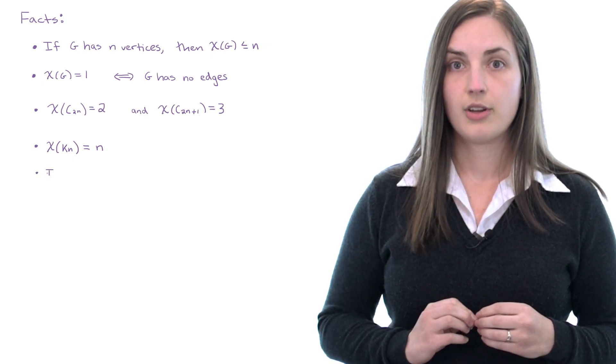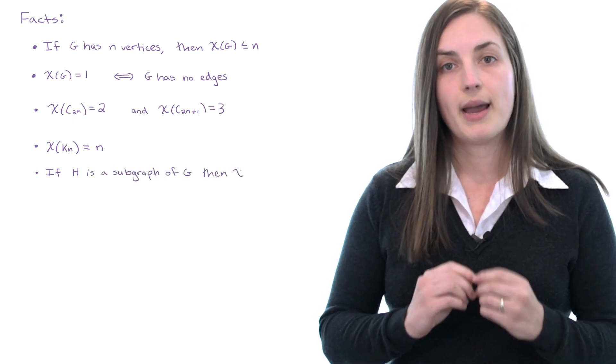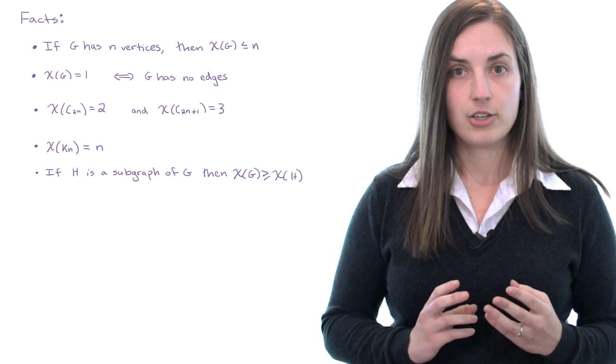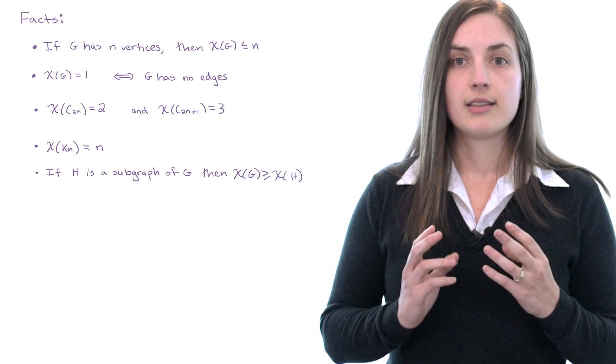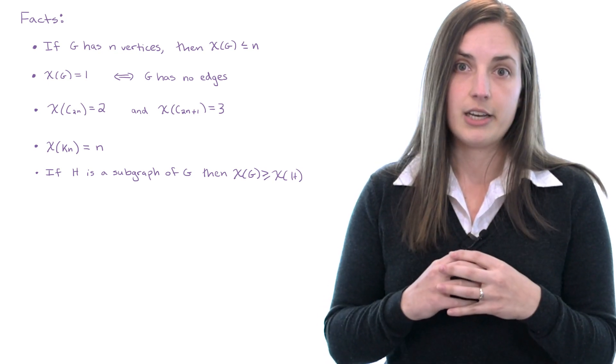And a final fact I'd like to point out is that if H is a subgraph of a graph G then the chromatic number of G is at least as big as the chromatic number of H. This should make intuitive sense because imagine you have your graph G and inside you have a smaller graph H.